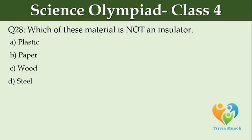Which of these materials is not an insulator? Option A: Plastic, Option B: Paper, Option C: Wood, Option D: Steel.